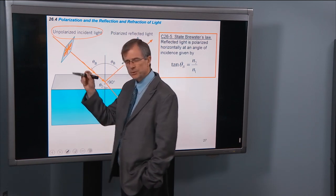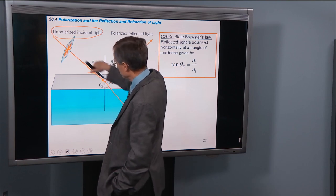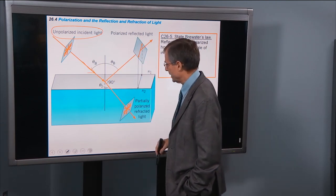These red arrows show the directions of the electric field, which are all perpendicular to the direction of propagation like we talked about in chapter 24.